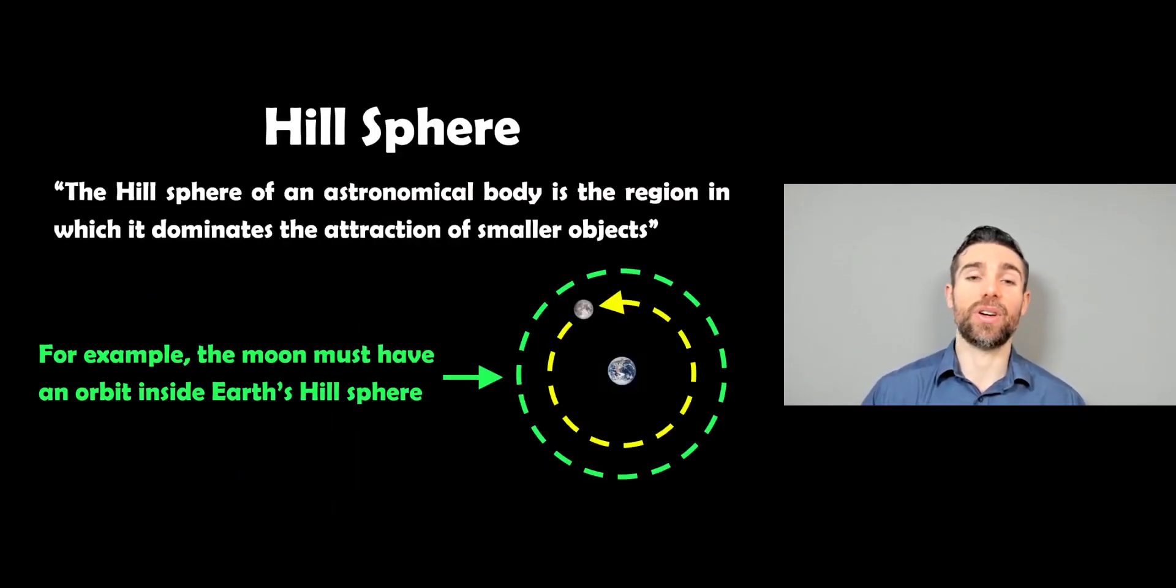So the thing we really need to focus on here is the hill sphere. So if you haven't come across the hill sphere before, it is a sphere around an object which dominates the attraction of smaller objects. So a good example is going to be Earth. There's going to be some area around it where other smaller objects are going to be gravitationally bound to it or be dominated by the gravity of Earth and not the gravitational force of the sun. And the moon sits inside that sphere of influence, that hill sphere. So in order for you to have an orbit bound to an object, it has to be inside the hill sphere. So that's basically what it is.